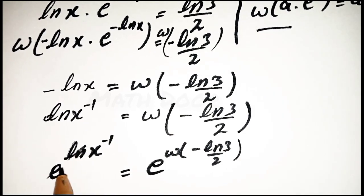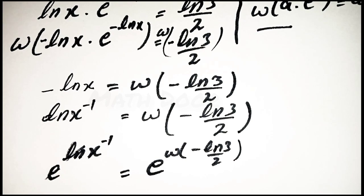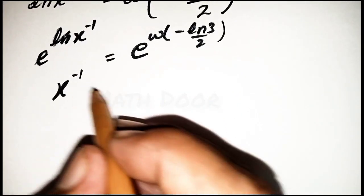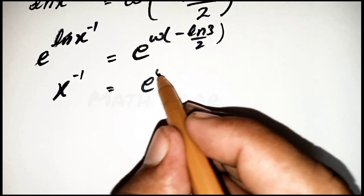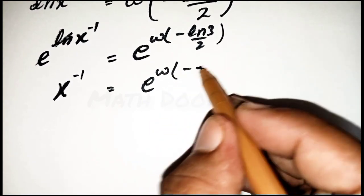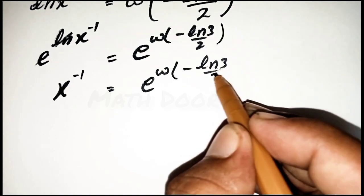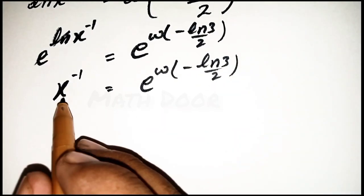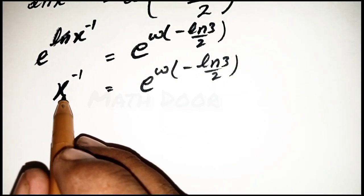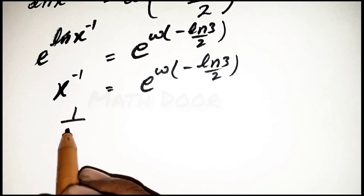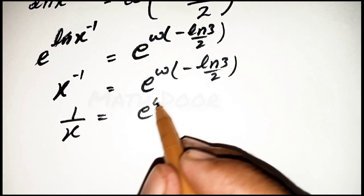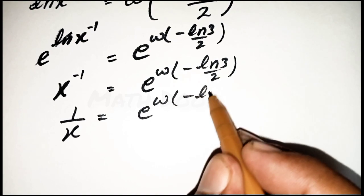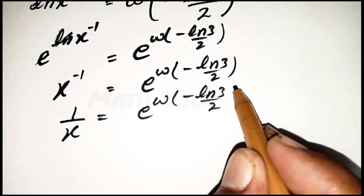The e cancels with ln(x), so the left-hand side becomes x^(−1) = e^(W[−ln(3)/2]). We write this as 1/x = e^(W[−ln(3)/2]).